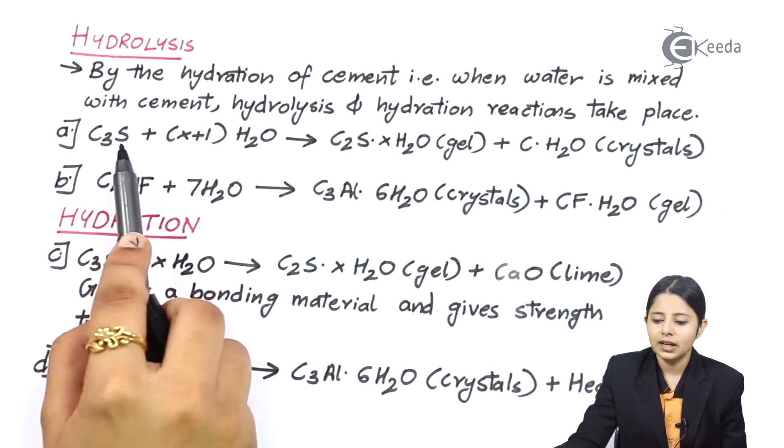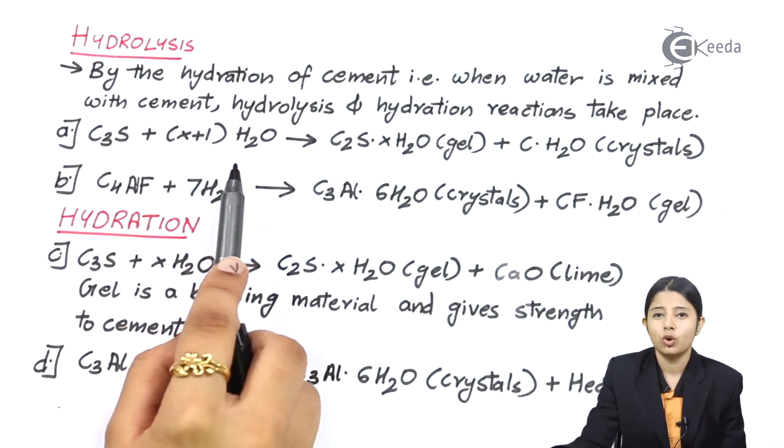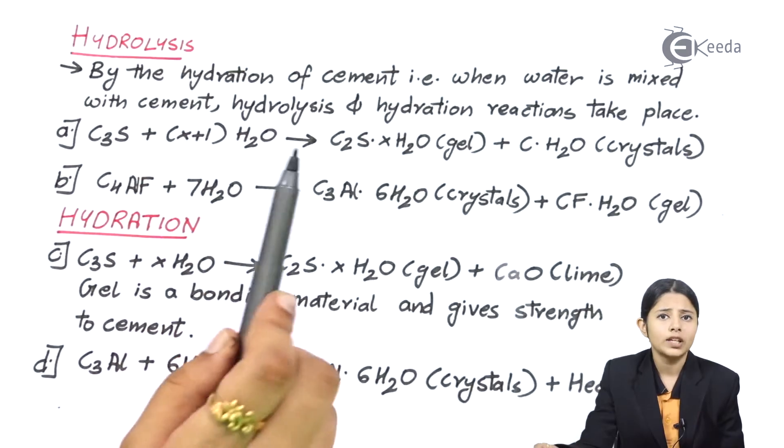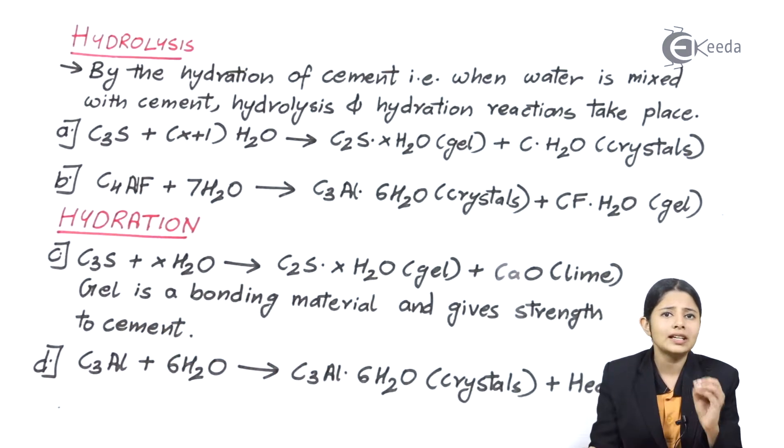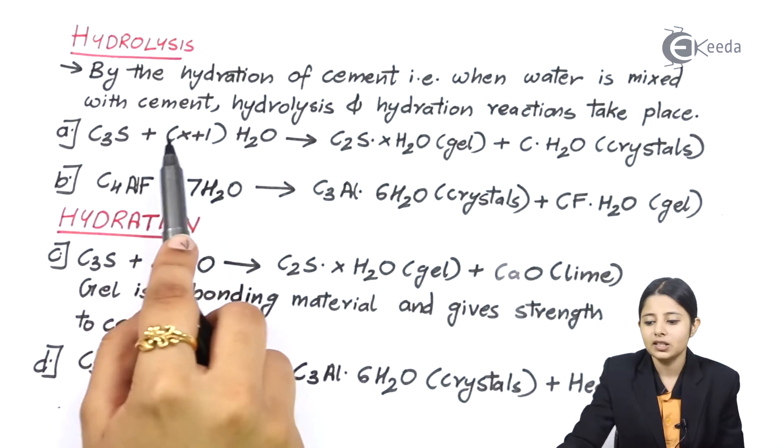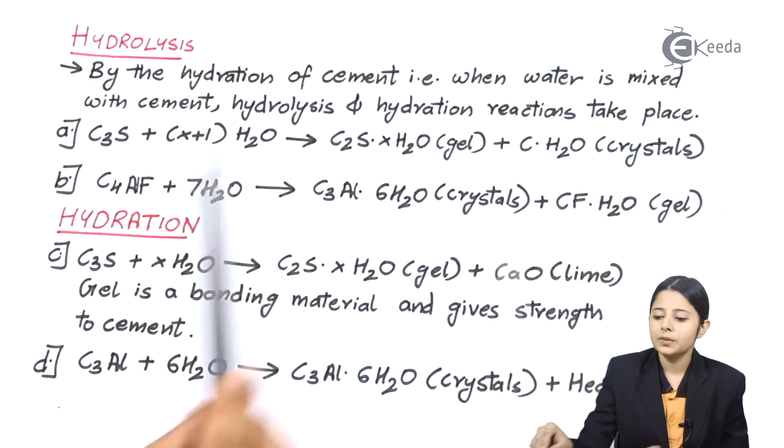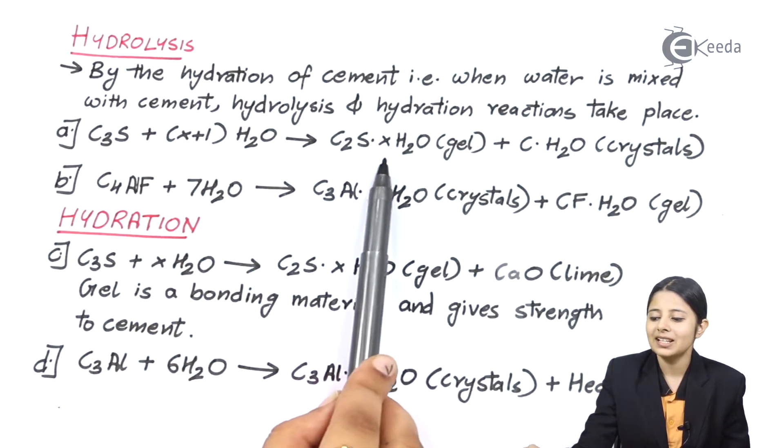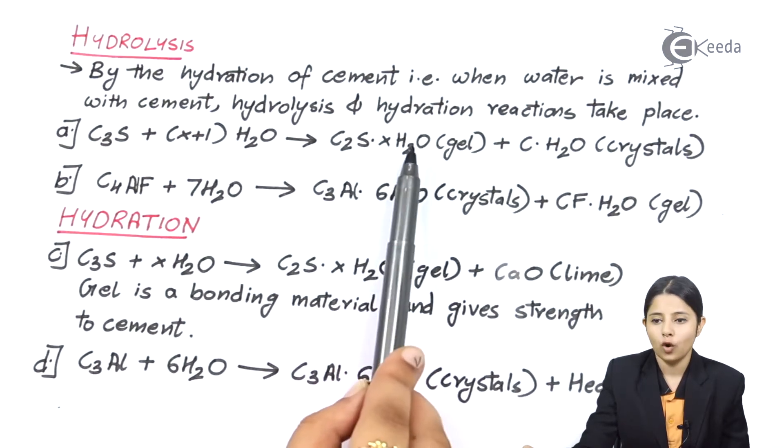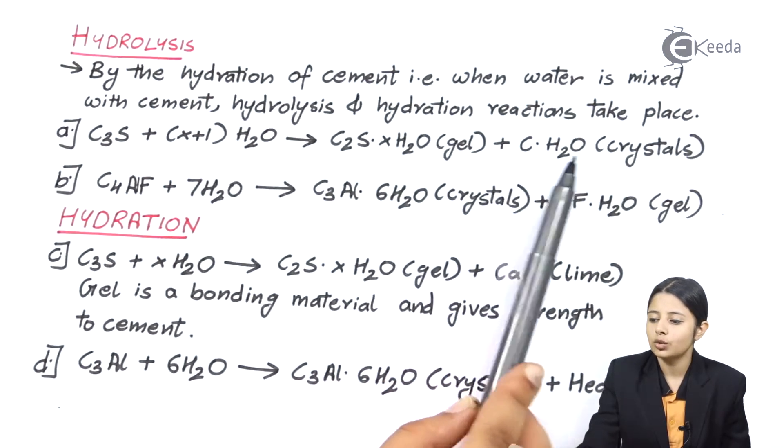I have C3S plus (X+1)H2O. What do we mean by (X+1)H2O? X is given as a variable because depending upon the amount of cement, we will put the amount of water in it. So (X+1)H2O forms C2S·XH2O in gel form plus C·H2O in crystals form.